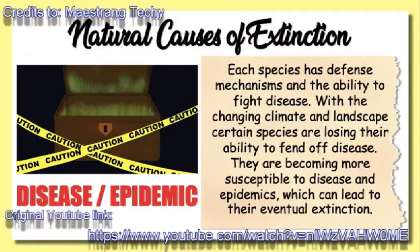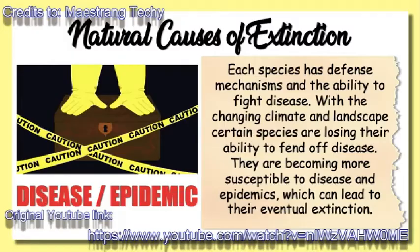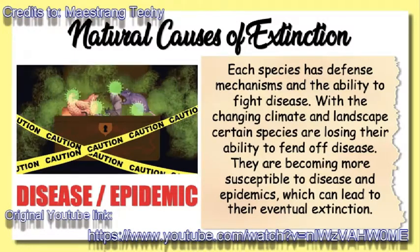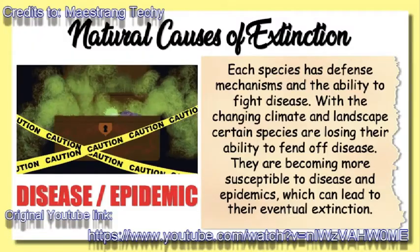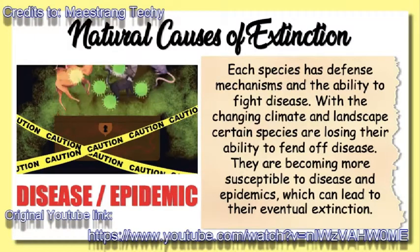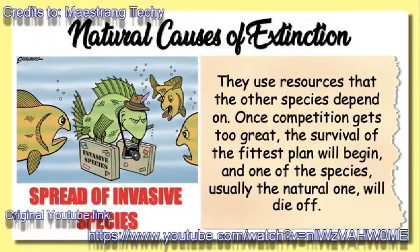Next, disease epidemic. Each species has defense mechanisms like immunities and the ability to fight disease. With the changing climate and landscape, certain species are losing their ability to fend off disease. They are becoming more susceptible to disease and epidemics, which can lead to their eventual extinction. Next, spread of invasive species. Invasive species invade foreign territory and use resources that other species depend on. Once competition gets too great, the survival of the fittest will begin, and one of the species — usually the natural one — will die off.